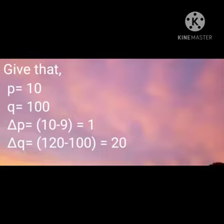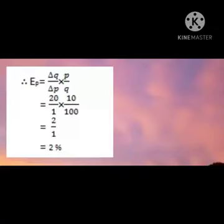Initial quantity demanded equals 100. To get the change in price, we subtract the original price from the new price: 10 minus 9 equals 1. For the change in quantity demanded, we also subtract the original quantity from the new quantity demanded: 120 minus 100 equals 20.